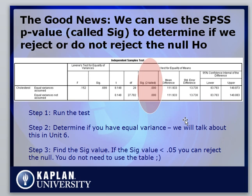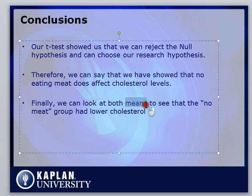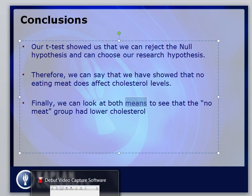SPSS also helps you make this conclusion using the SIG result — as long as SIG is less than 0.05, your alpha value, you can reject the null; otherwise you can't. In conclusion, our t-test showed we can reject the null hypothesis and say that not eating meat does affect cholesterol. Looking at both means confirms the no-meat group has lower cholesterol. This is our first introduction to hypothesis testing, and more tutorials will come. Thanks.